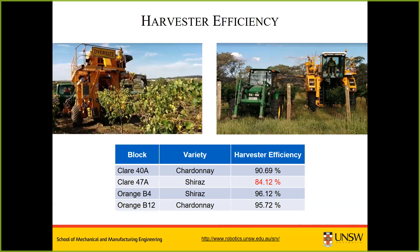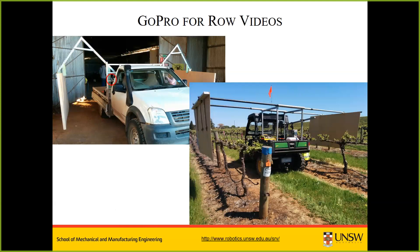Getting into our yield estimation by image processing: in year one we trialled a system using GoPro videos, mounting cameras onto vehicles. One contraption mounted on a ute — anecdotally called the DeLorean because of its wing shape — had the camera circled in red and backing boards mounted over the rows to provide a clear background as we drove through the block. However, this proved very impractical. In the later year of the project, a solution was found that worked without using the backing boards.